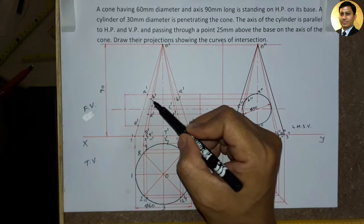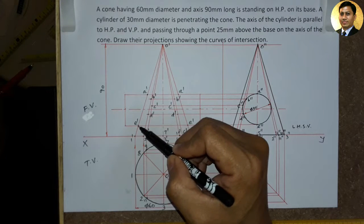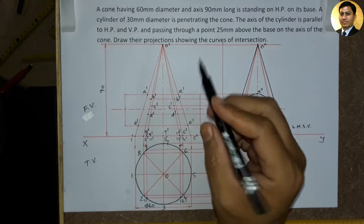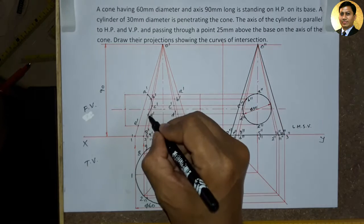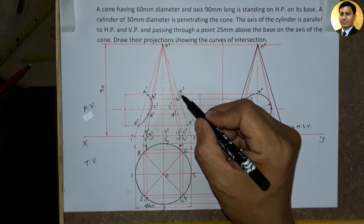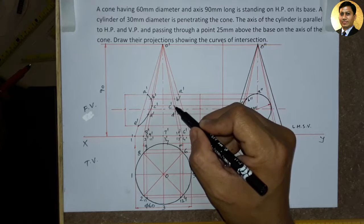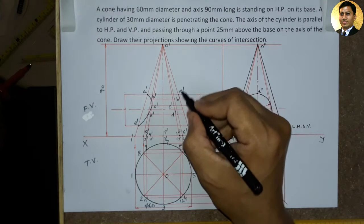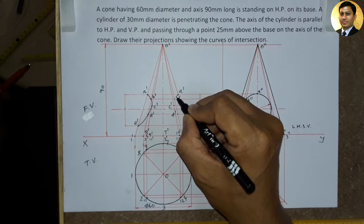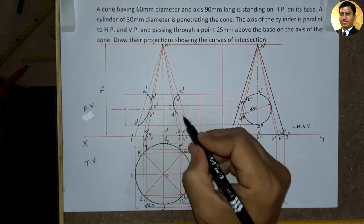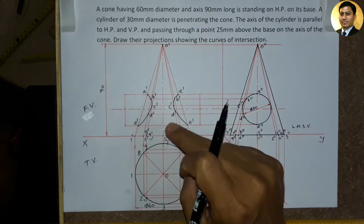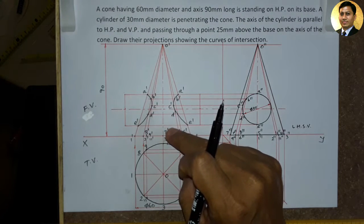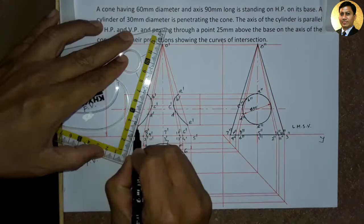Ab hum A dash, B dash, C dash, D dash, aur E dash points ko smooth curve se jod lenge. Same way right side bhi hum A dash, B dash, C dash, D dash, aur E dash ko smooth curve se jod lenge. Front view mein cone aur cylinder ka baaki ka portion jo hume dikhega, use dark line se jod lenge.